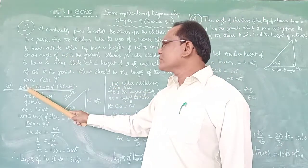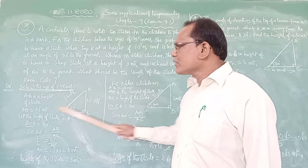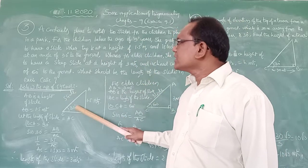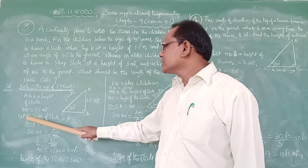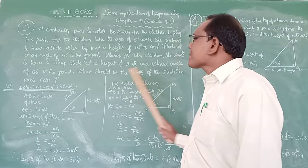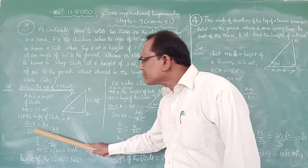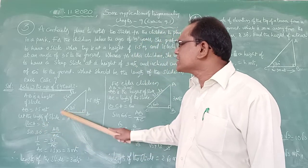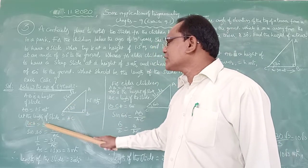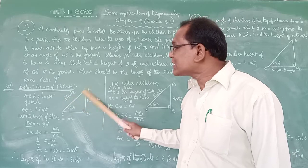Solution for Case 1 — below age 5 years: AB, the height of the slide, is 1.5 meters as given. The slide is installed at an angle of 30 degrees to the ground. Let the length of the slide AC be what we need to find. Therefore, angle BCA equals 30 degrees. AB is 1.5 meters and AC is the length we must find.